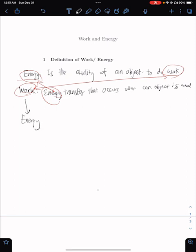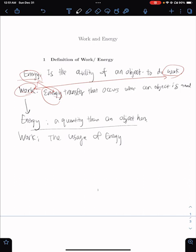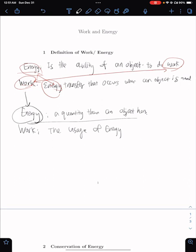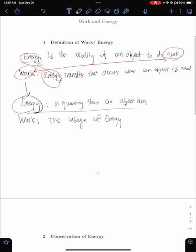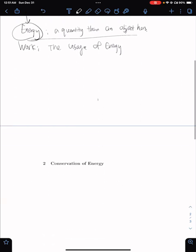I just see energy as a quantity that an object has. This might seem a bit more abstract, but don't really worry about knowing the definitions too much. You just need to have a general idea of what these are to do problems and stuff like that. Energy is basically something that an object has because of different forces in the world. And work is the usage of energy is how I like to see it. But there's a lot more to this.